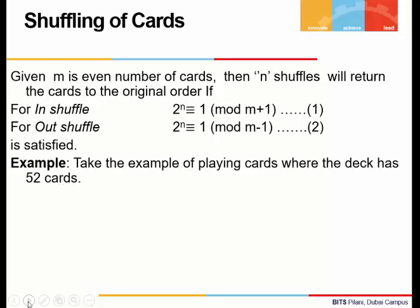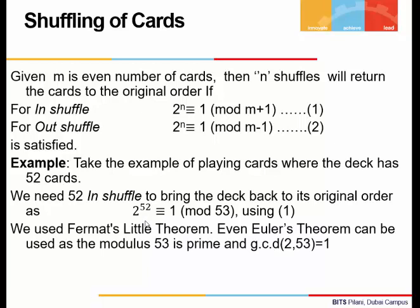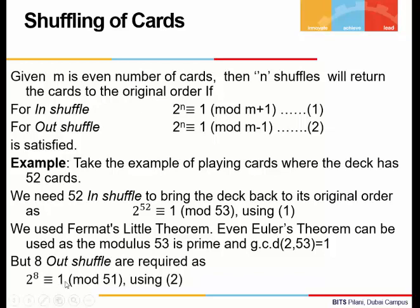Let's take the example of playing cards. We know that the deck has 52 cards. We need 52 in-shuffles to bring the deck back to its original order, because for in-shuffles we use the formula 2 to the power n congruent to 1 mod of m plus 1, which gives us m plus 1 as 53. Since 53 is prime, using Euler's theorem, n will become 52. We can also verify this since GCD of 2 and 53 is 1. But we need only 8 out-shuffles, as 2 to the power 8 is congruent to 1 mod of 51, using our second formula.